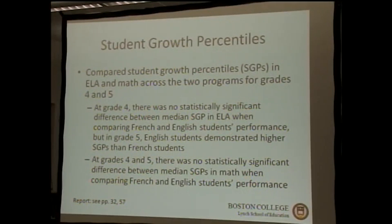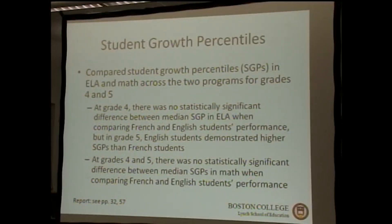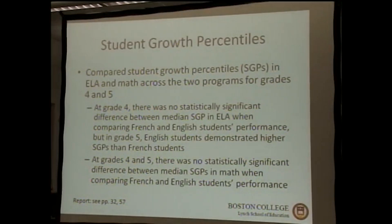We calculated SGPs for 4th and 5th grade — unavailable for 3rd grade since it's the first year of testing. We found no statistically significant differences except for 5th grade ELA, where English students' median SGP was the 68th percentile compared to French students' 54.5th percentile. According to the state, any difference greater than 10 percentile points is deemed educationally significant. If something is both statistically significant and greater than 10 points, it can be termed both statistically and practically significant.